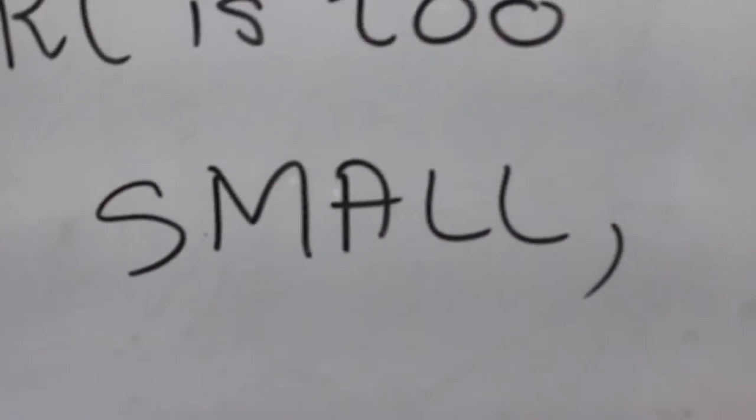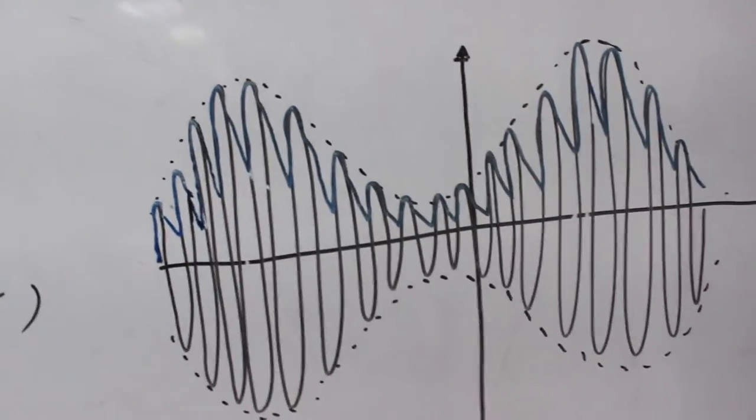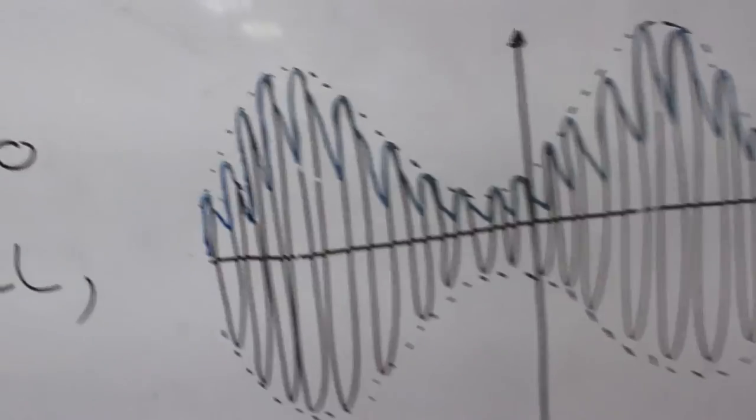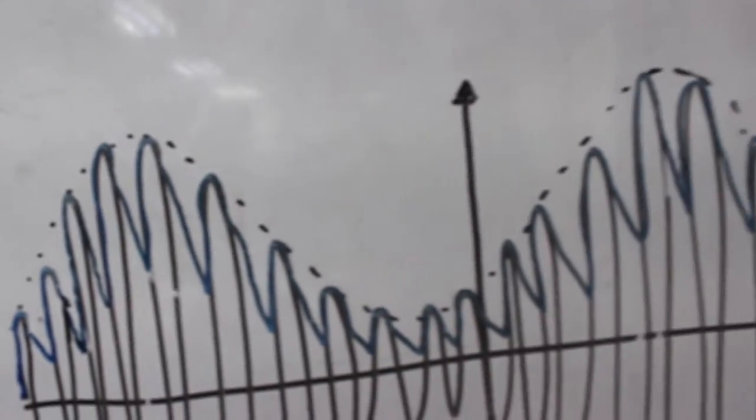If the time constant is too small, the output filter falls very rapidly after each peak. Thus, it will not follow the envelope closely.